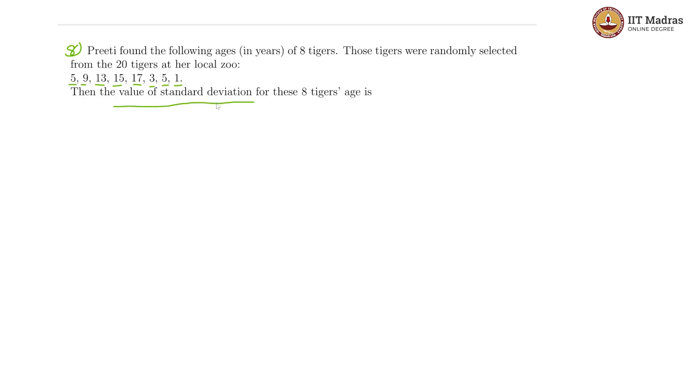This is clearly sample standard deviation, so we need to first find the mean. The mean x bar would be 5 plus 9 plus 13 plus 15 plus 17 plus 3 plus 5 plus 1, the whole divided by 8, which gives us 68 divided by 8, which is 8.5.